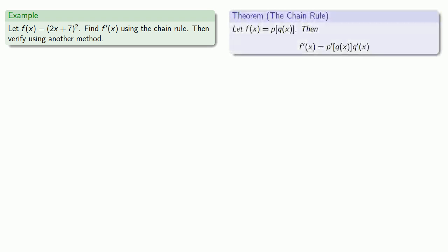So the chain rule tells us that the derivative of a composite function is the derivative of the outside function, evaluated at the inside function, times the derivative of the inside function. Or a better way of looking at this is the derivative of the last thing that you do, evaluated at the first thing you did, times the derivative of that first thing.